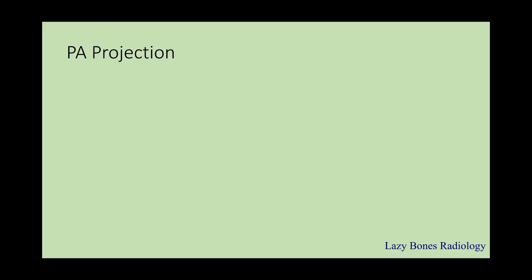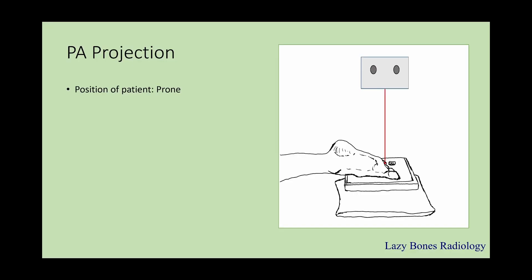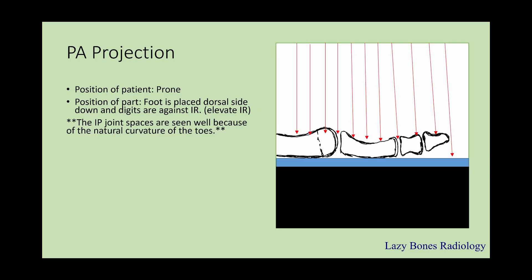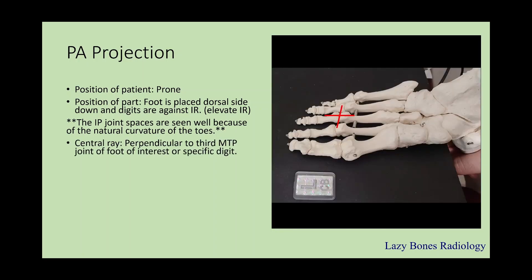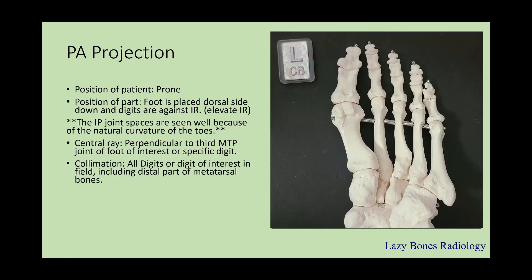Now let's move on to the PA projection. The position of the patient is prone. Position of the part: foot is placed dorsal side down, and the digits are against the IR. Remember to elevate the IR in order to reduce superimposition from the foot on the toes. As you can see here on the right hand side, when you elevate the foot, the IP joint spaces are able to be seen because of the natural curvature of the toes. Centering is perpendicular to the third MTP joint or the MTP joint of the digit of interest, depending on the protocol. Make sure to collimate all the digits or the digit of interest in the field, including the distal part of the metatarsal bones. SID is 40 inches, and remember to label correctly.